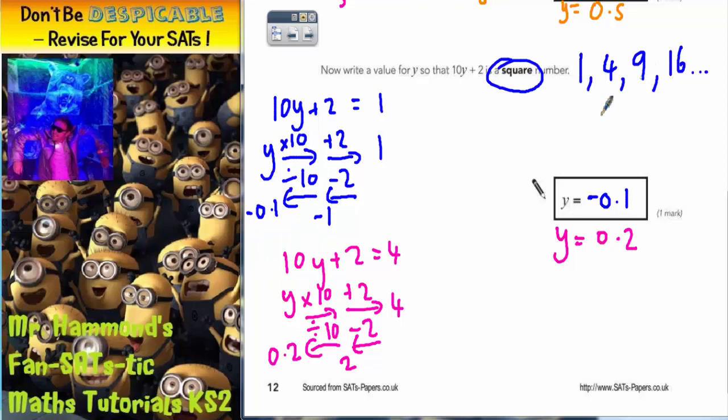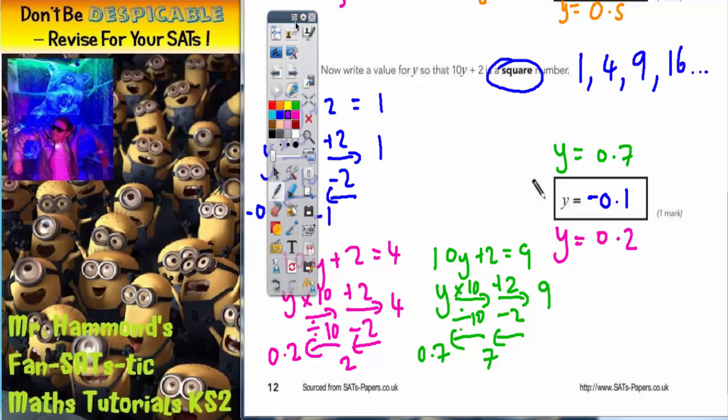Let's try a couple more. We could have chosen the square number of 9. So we could have said 10y plus 2 equals 9. Set up your flow diagram again. So mystery number y times by 10. Then we add 2 and out pops 9. Reverse it backwards. Opposite of add 2 is take 2. Opposite of times 10 is divide by 10. 9 take away 2 is 7. 7 divided by 10 is 0.7. So we could have added y as 0.7.